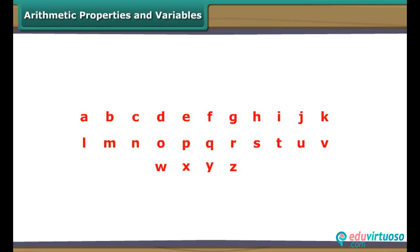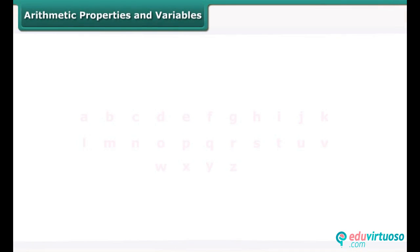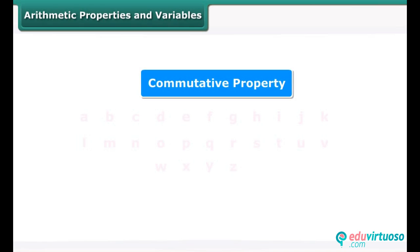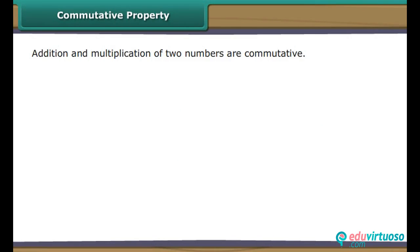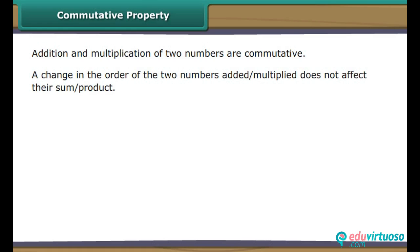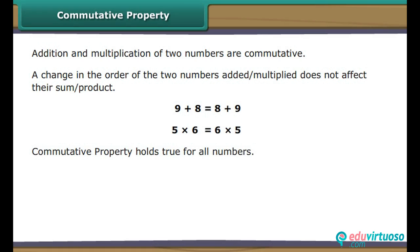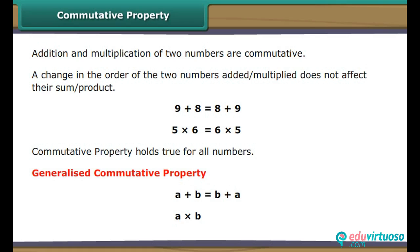Let us now express some commonly used arithmetic properties with the help of variables. These properties are: commutative property, associative property, and distributive property. Addition and multiplication of two numbers are commutative. A change in the order does not affect their sum or product: 9 plus 8 is the same as 8 plus 9; 5 into 6 is the same as 6 into 5. We generalize: A plus B equals B plus A, and A into B equals B into A.